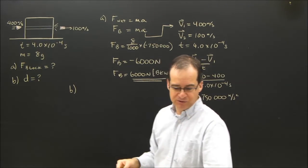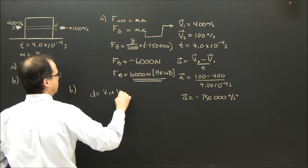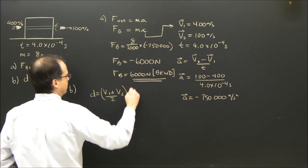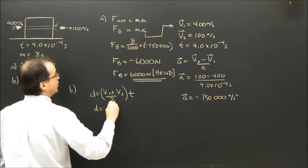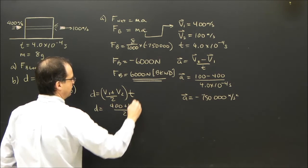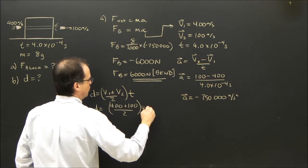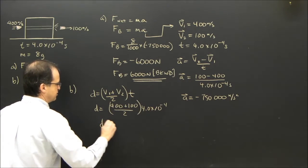So I'm going to use this one. So D equals V1 plus V2 over 2 times T. D equals 400 plus 100 divided by 2 times 4.0 times 10 to the negative 4.